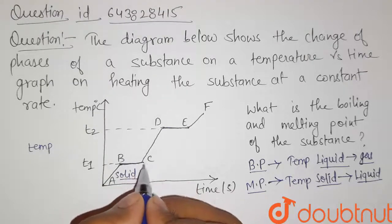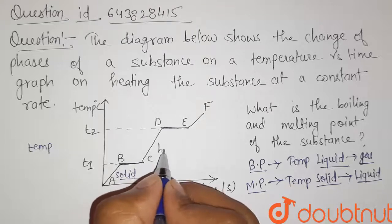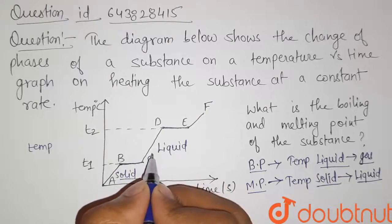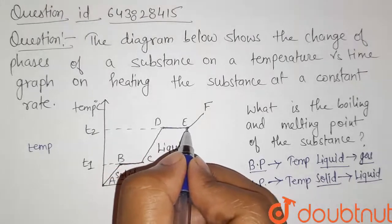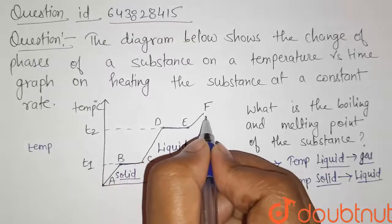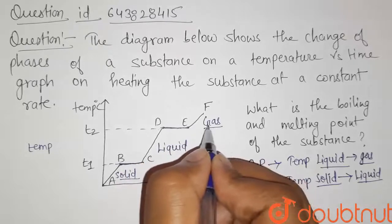Now there is a phase change and from solid the substance will convert into liquid. So from C to D the substance is liquid. Now again there is a phase change and from E to F the substance is in gaseous state.